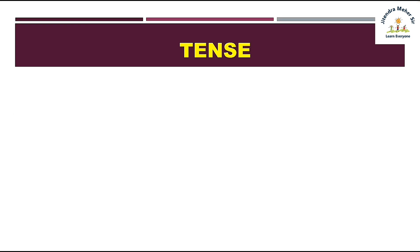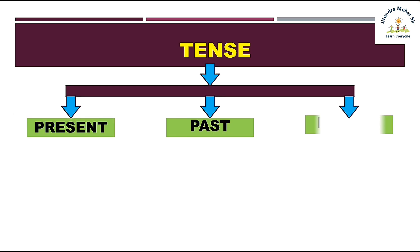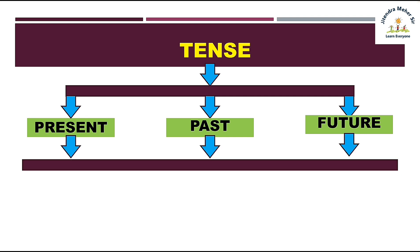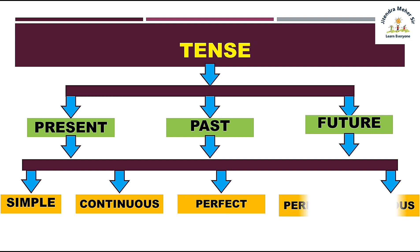Pehle dekhte hain tenses ke types. Tenses has mainly three types: first is present, second is past, and third is future. Each has four sub-types: simple, continuous, perfect, and perfect continuous. So: simple present, simple past, simple future; continuous present, continuous past, continuous future; present perfect, past perfect, perfect future; and perfect continuous present, perfect continuous past, perfect continuous future.